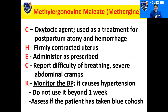Methyl ergonovin malleate, or Methrogen, is an oxytocic agent used as a treatment for postpartum atony, and it helps prevent hemorrhage or bleeding. You would know that it is effective when there is a firmly contracted uterus. It is best given or administered as prescribed by the physician.